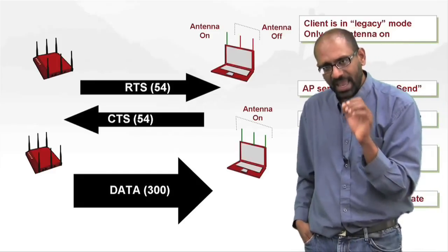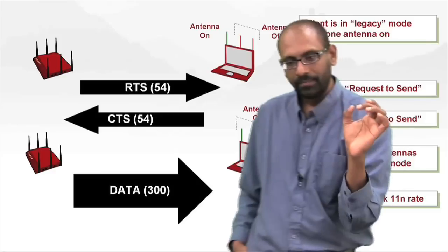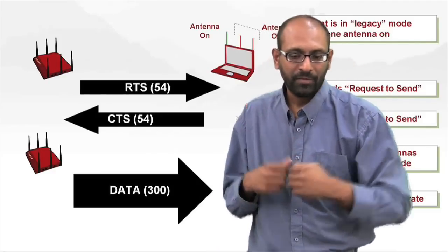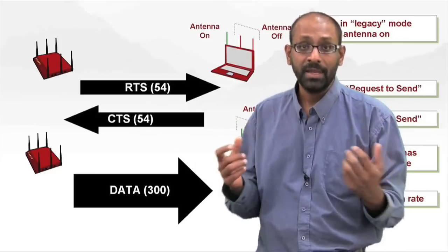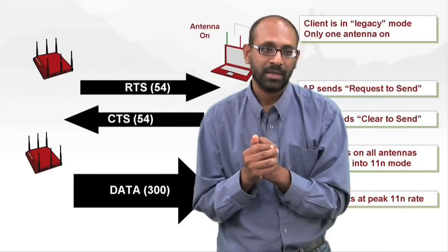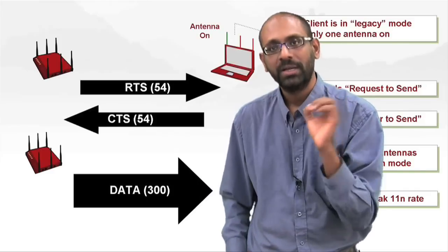So, effectively what you can do is, except for those periods of time when a client is actually receiving frames, it can effectively mimic its 802.11 ABG behavior in terms of power consumption and only spike up all of its antennas at the point where it's actually transmitting or receiving.